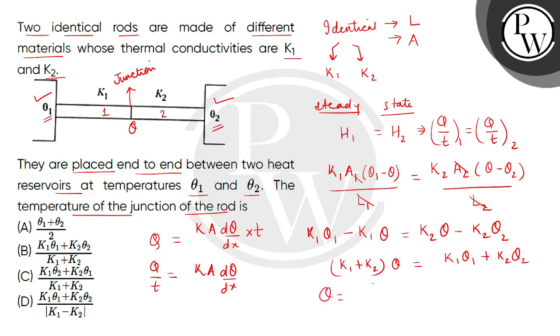So the temperature of the junction will be K1 Theta1 plus K2 Theta2, all divided by K1 plus K2. So the correct answer will be option number B. Thank you.